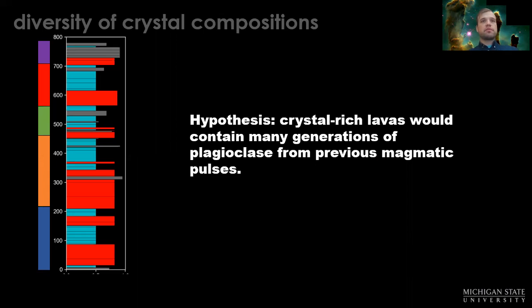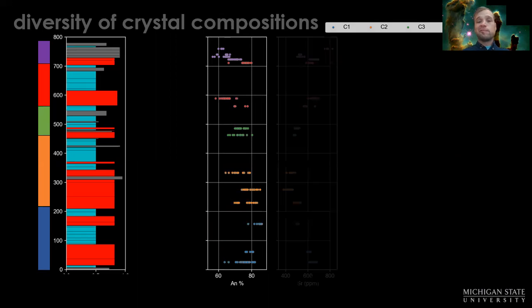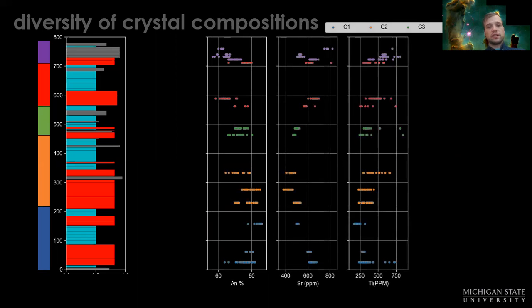We analyze about 300 different crystals from throughout the stratigraphic section. When we look at their chemistry—the whole rock or the major elements that we typically display as the plagioclase's anorthite content, as well as trace elements—we see that each lava has basically one population of crystals.